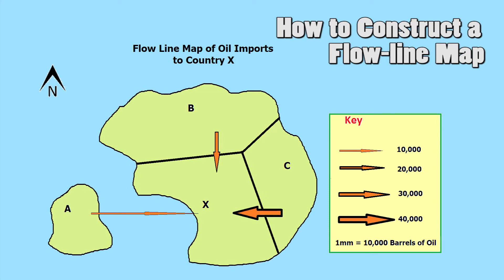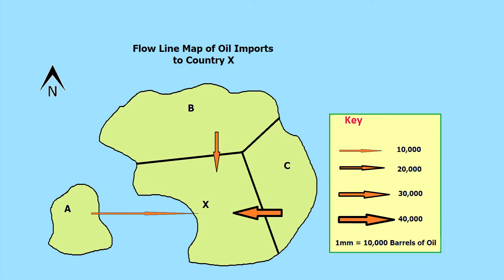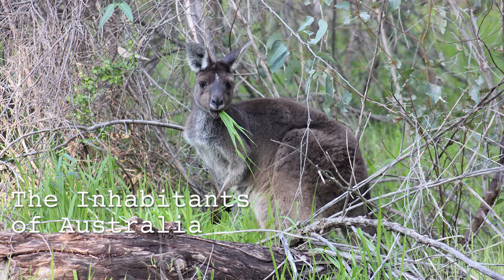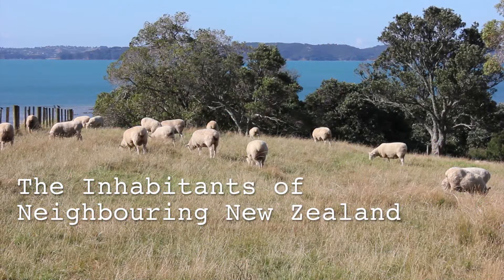Flowline maps are used to show the movement of information, goods, or people between places and the amount being moved. In this case, I'm going to construct a flowline map to show the flow of people to Australia from its neighboring countries.